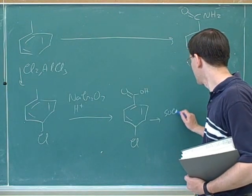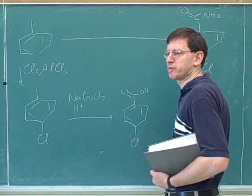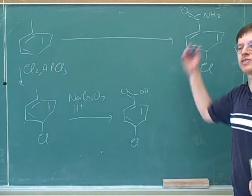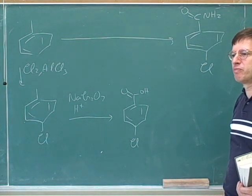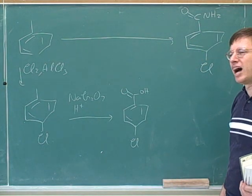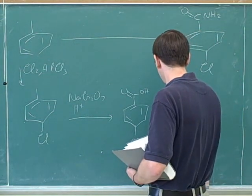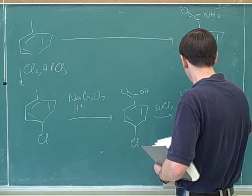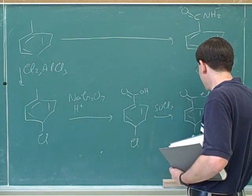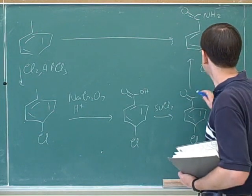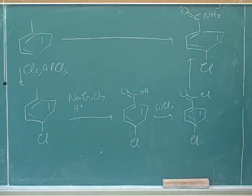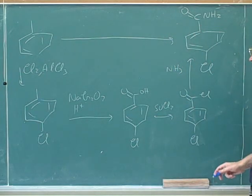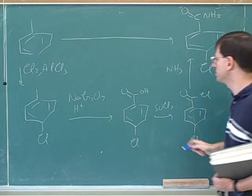In doubt, just do the SOCl₂ route — both approaches are permissible. Remember, you've learned so much organic chemistry that there can definitely be more than one correct way to solve the problem. Usually SOCl₂ is the best way because that puts us at the top of the reactivity chart. Then the next step is NH₃. We don't need any catalysts because this is so reactive — this is just one of our normal addition-elimination attacks on the carboxylic acid derivative.